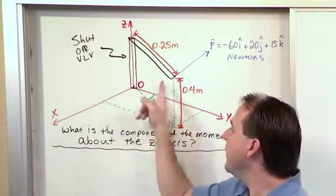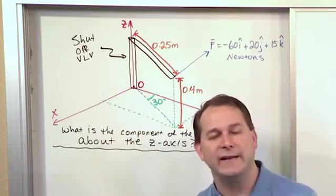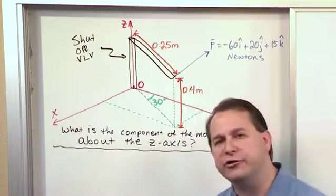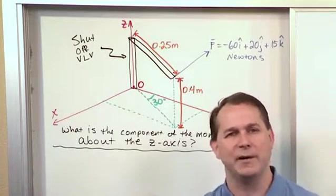So this is I, J, and K. Ultimately we're going to take that moment and we're going to dot it in the K direction to find out how much of that rotational moment is aligned up in that direction.